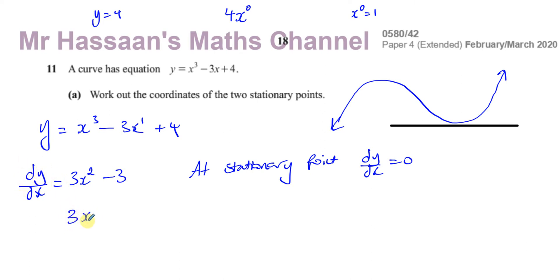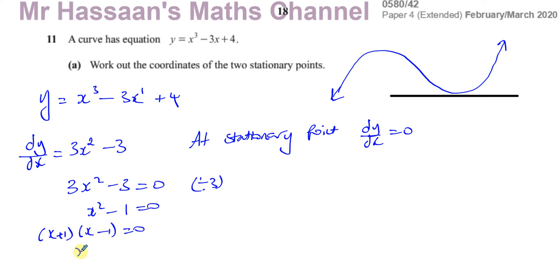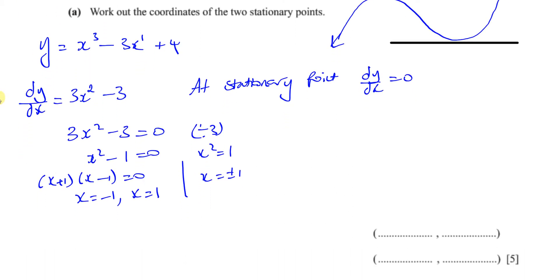We want to find when 3x squared minus 3 equals zero. We can divide everything by 3 to get x squared minus 1 equals zero. Using the difference of squares: x plus 1 equals 0 and x minus 1 equals 0, so x equals minus 1 and x equals plus 1. Alternatively, x squared equals 1 gives x equals plus or minus 1. Those are the two values of x at the stationary points.